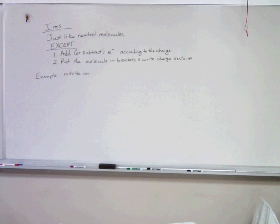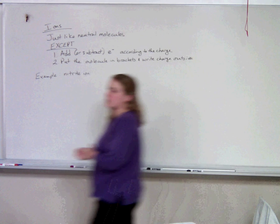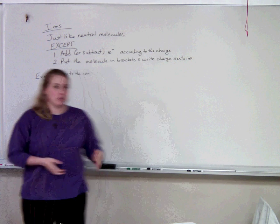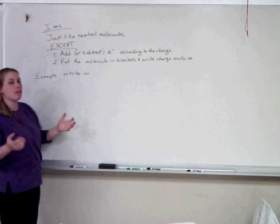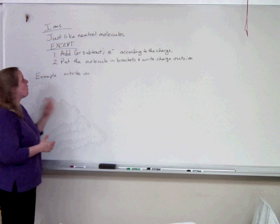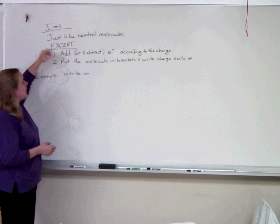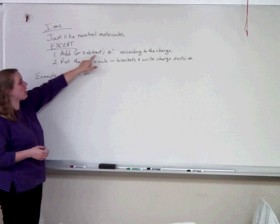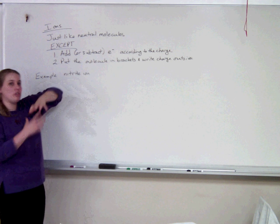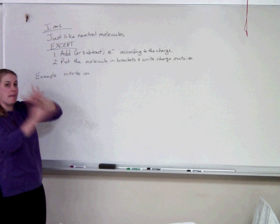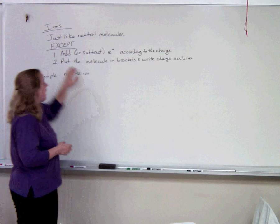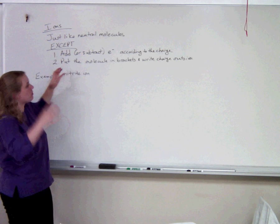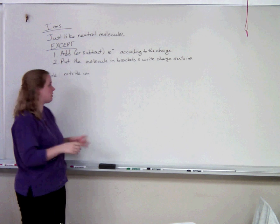Welcome to the video on how to draw ions. This is going to sound very familiar because drawing ions is just like drawing a neutral molecule, which is what we were doing last class. The only difference is that you have to change the number of electrons you have in your electron pool according to the charge of the ion. And at the end, we just have to put the molecule in brackets and put that charge on the outside.